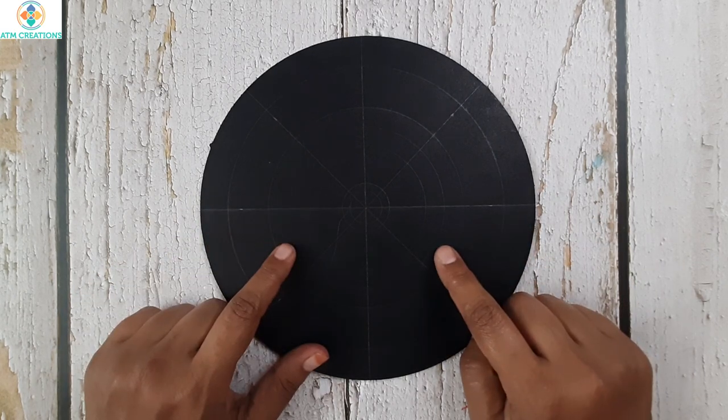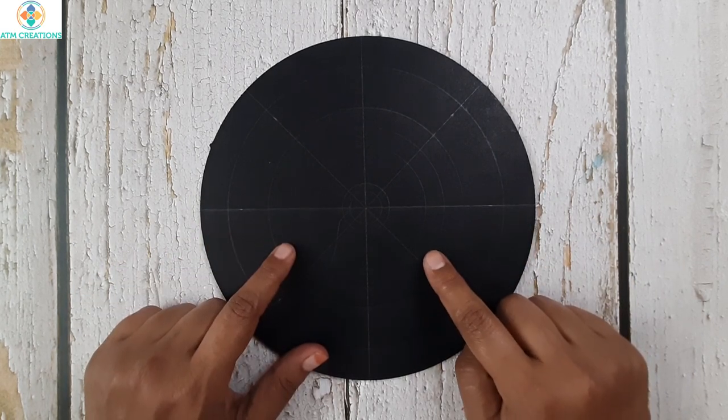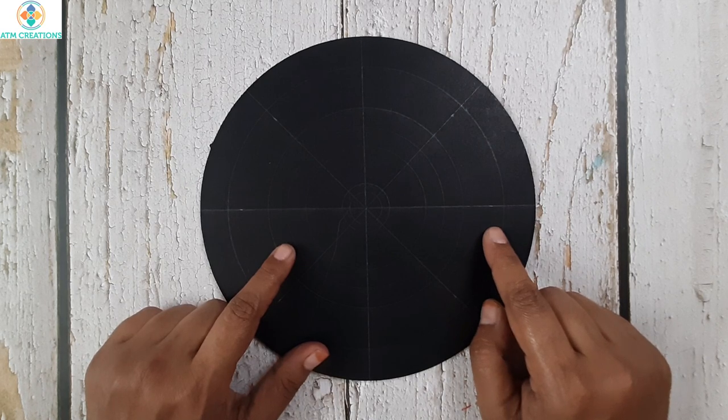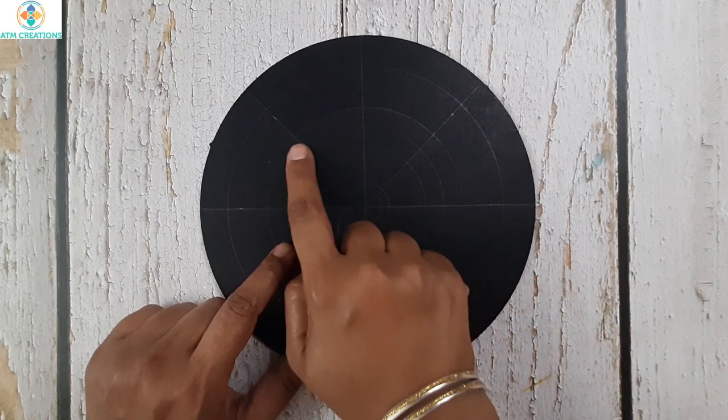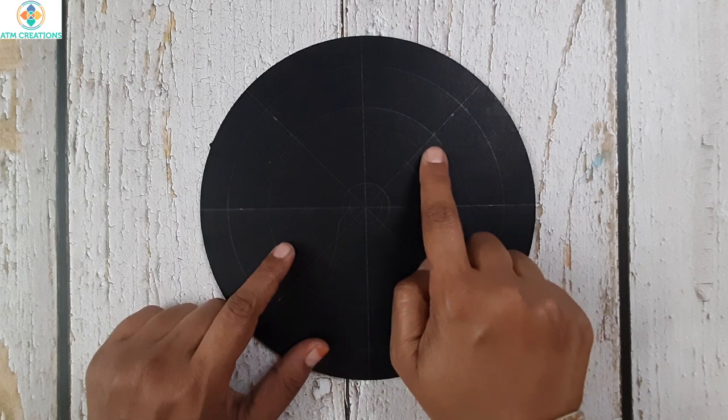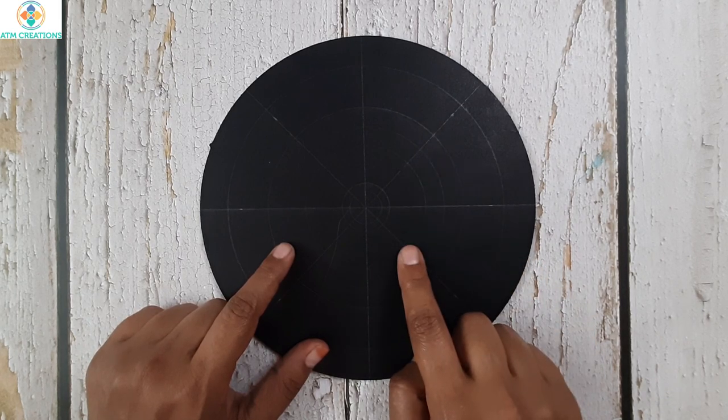This is an 8 inch MDF board in which I found the center, drew circles and created grids. The angles are marked at 45, 90 and 135. Let me get started with dotting.